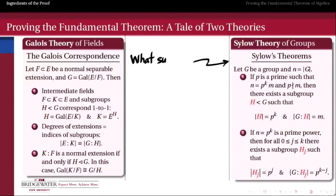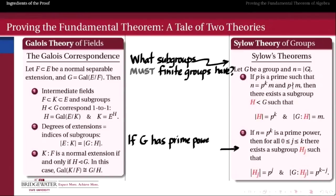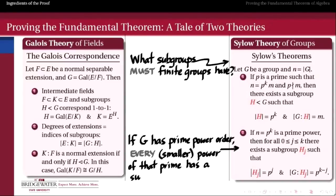The second body of knowledge we need is about the structure of subgroups of finite groups. A couple of theorems called Sylow's theorems are going to come in handy. The first one: if I have a group whose order is a power of a prime number, p to the k, then that group must have a subgroup whose order is equal to each of the smaller prime powers — p to the k, p to the k minus 1, p to the k minus 2, and so on down to p.